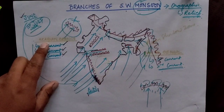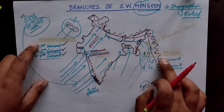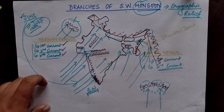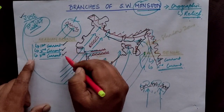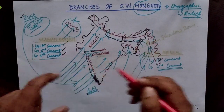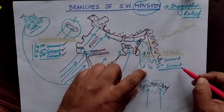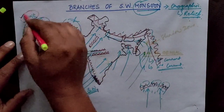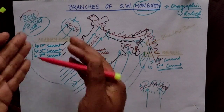The Southwest monsoon has two branches: the Arabian branch, entering from the Arabian Sea, and the Bay of Bengal branch, entering from the Bay of Bengal. The Arabian branch has three different currents — first, second, and third — while the Bay of Bengal branch has two currents. Rainfall in our country begins in the month of June.